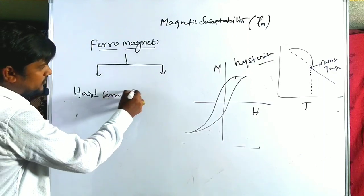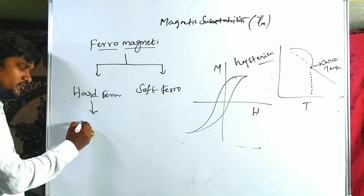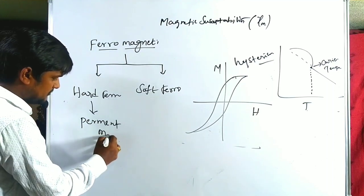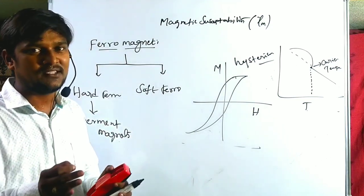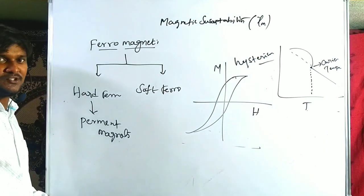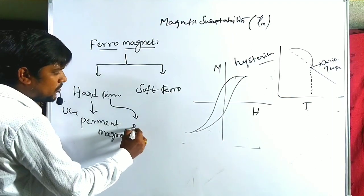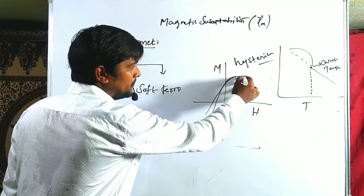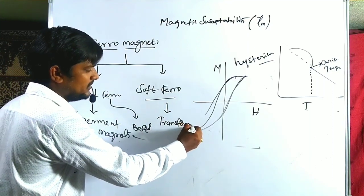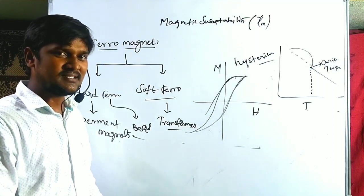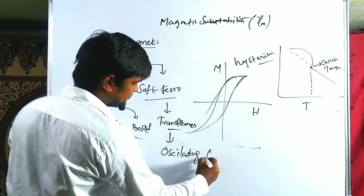Hard ferromagnets are those in which the direction of spins cannot be changed. That is why hard ferromagnetic species are used in permanent magnets. Soft ferromagnets readily respond to the oscillating field and are used in transformers.